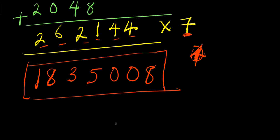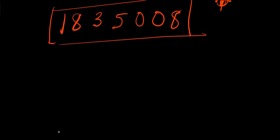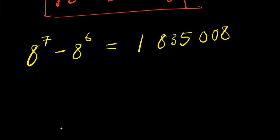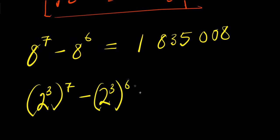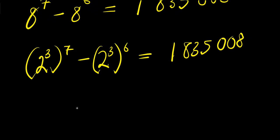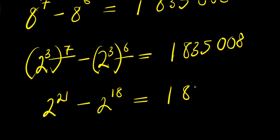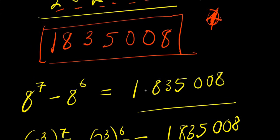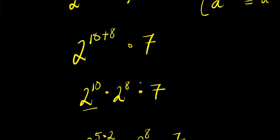So our answer for 8 power 7 minus 8 power 6 equals 1 million 835 thousand and 8. We can also write this as 2 power 21 minus 2 power 18 equals 1 million 835 thousand and 8. So ladies and gentlemen, here it is — we have gotten our answer without the use of a calculator. Don't forget to subscribe and share this video. Thank you and goodbye.